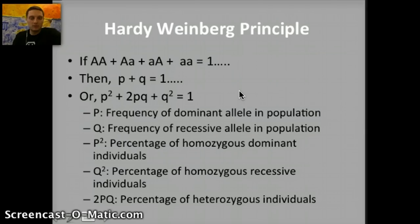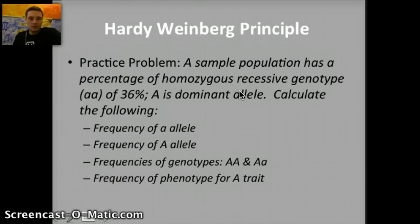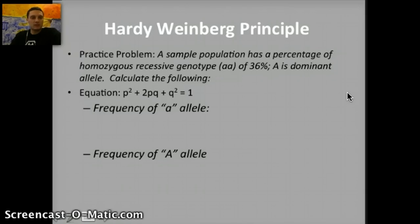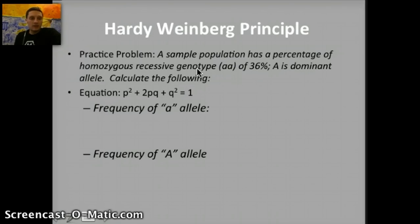Let's do a practice problem, because you're going to need to be able to solve these. If a sample population has a percentage of homozygous recessive genotype — lowercase a's — of 36%, and we use capital A for the dominant allele, we want to calculate: the frequency of the recessive allele, the frequency of the dominant allele, the frequency of homozygous dominant and heterozygous genotypes, and the frequency of the dominant phenotype. Go ahead and pause the video, write down the problem, try to calculate both, then play the video again.